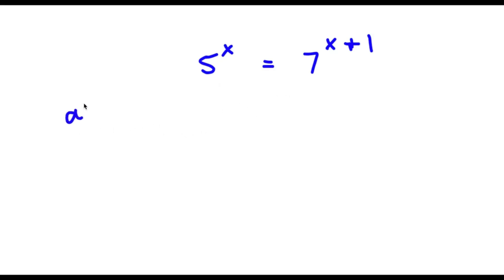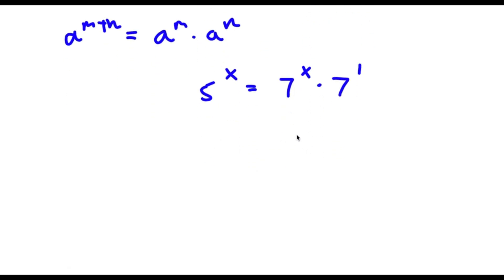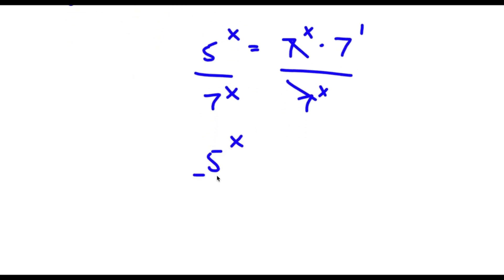Now if I have something in the form a to the power of m plus n, this is equal to a to the power of m times a to the power of n. So 7 to the power of x plus 1 is going to equal 7 to the power of x times 7 to the power of 1. Now I'm going to divide both sides by 7 to the power of x, so these two cancel out. Now I have 5 to the power of x over 7 to the power of x is equal to 7 to the power of 1.